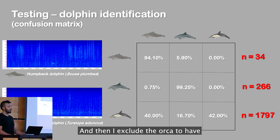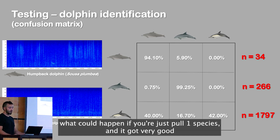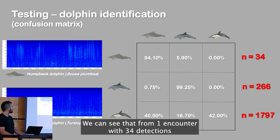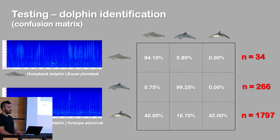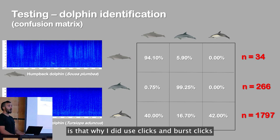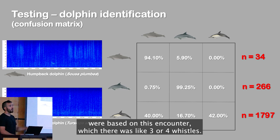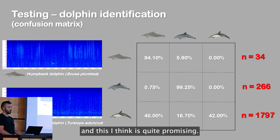I then excluded the orca to get a sense of what could happen with just one focal species, and it got very good. Looking at the humpback dolphin data, from one encounter with 34 detections, I got an accuracy of 94%, which is very good. One important thing to note is why I used clicks and burst clicks for detection: those 34 detections were based on an encounter that had only three or four whistles. Most detections were classified based on the clicks and burst clicks, which I think is quite promising.